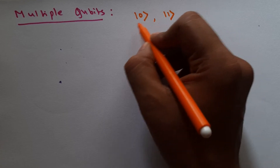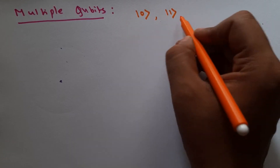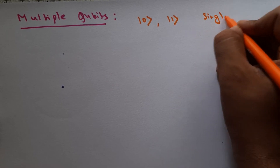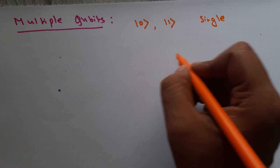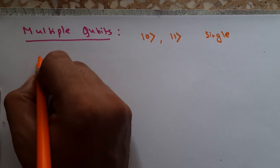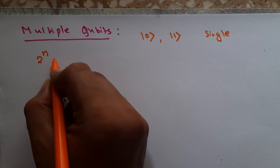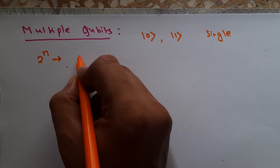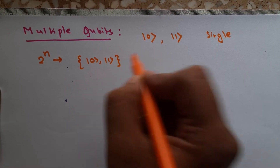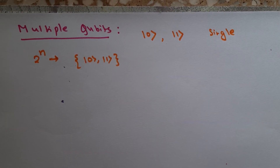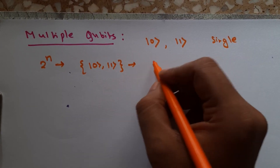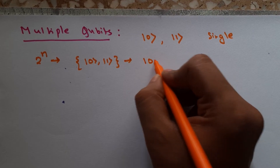If there are two qubits, the number of basis states follows the rule of 2 to the power n. So for two qubits, writing 0 and 1 gives us a two-qubit basis, and the possible basis states are 00, 01, 10, and 11.